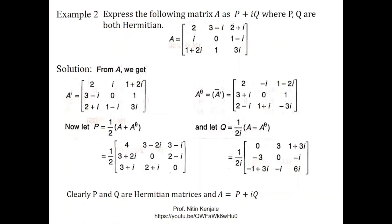I hope you understood how to express any given matrix as sum of symmetric and skew-symmetric matrices, sum of Hermitian and skew-Hermitian matrices, and as P + iQ where P and Q are both Hermitian matrices.